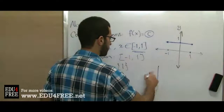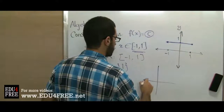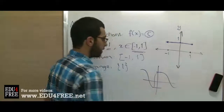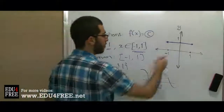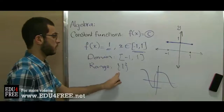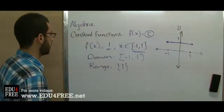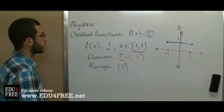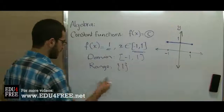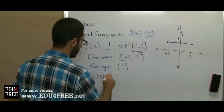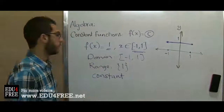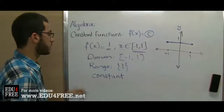For a general function the range is the portion it covers on the y-axis. For a constant function it is only one point — the constant in our function. So here the range is {1}. Third, the monotonicity: the constant function is constant — neither increasing nor decreasing — because for any value of x we always get the same value of y.